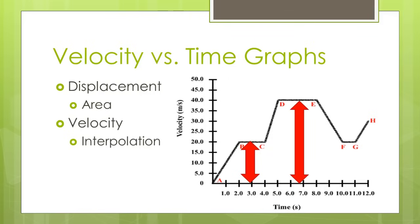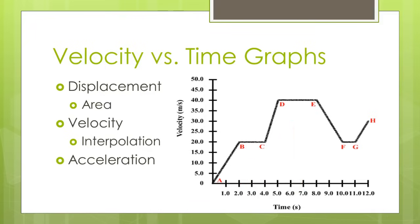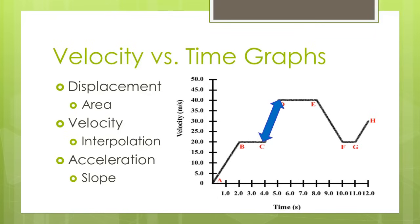So at three seconds, the object is moving 20 meters per second. Between six and seven seconds, the object is moving about 40 to 42 meters per second — just read the graph to find the velocity. To find acceleration, we use the slope of the line. All velocity versus time graphs will be straight lines with either positive slopes, negative slopes, or zero horizontal slopes. A positive slope means positive acceleration, a negative slope means negative acceleration, and a zero slope means zero acceleration.